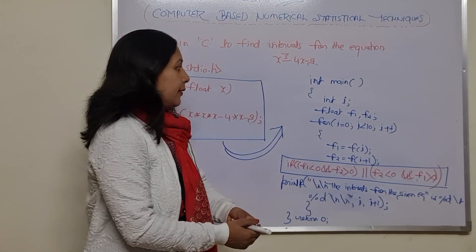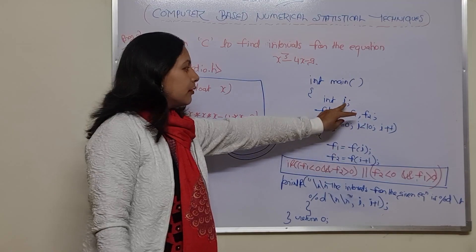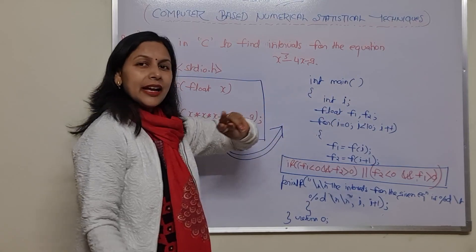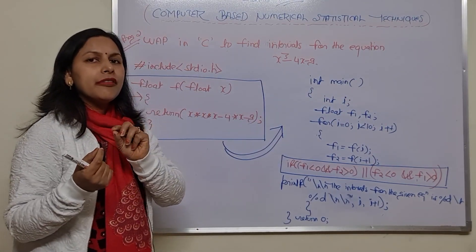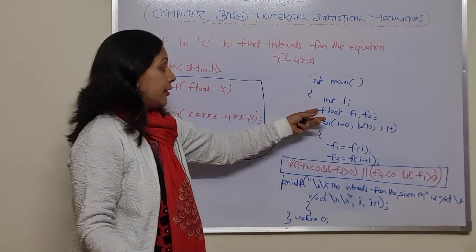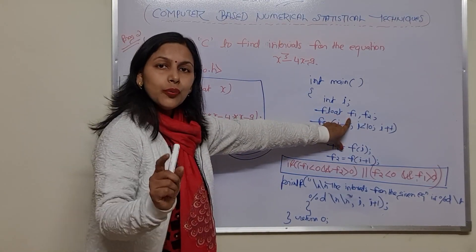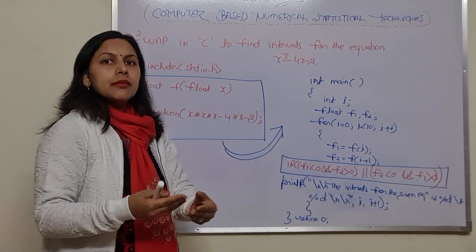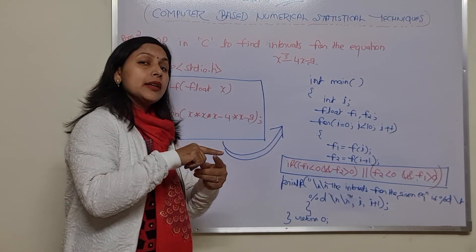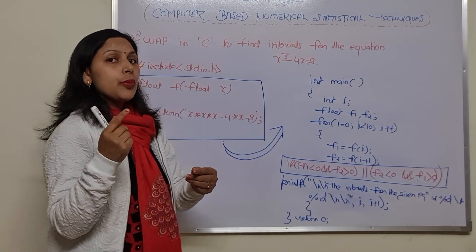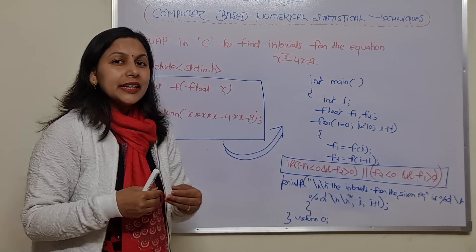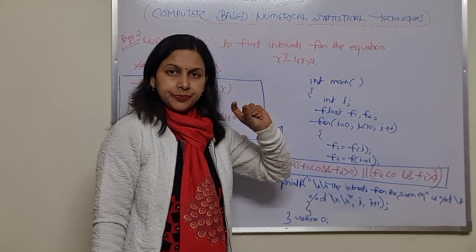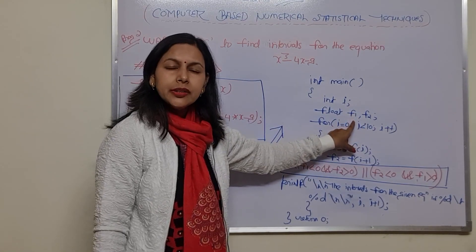In the main function, we would declare one variable that is i. Because in case of i, I would take the number of values for x. After that, I am just taking two variables, f1 and f2. Because I need to compare two values — whether the first value is a negative value and the other value is a positive value. That is why I am taking two floating point variables, f1 and f2.